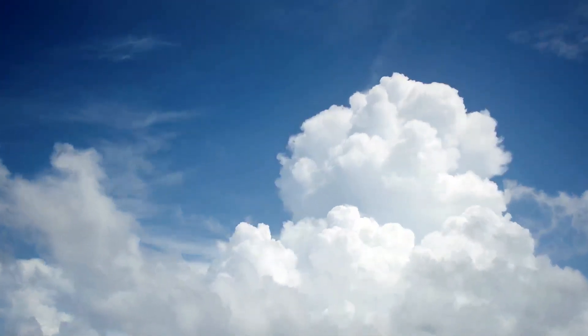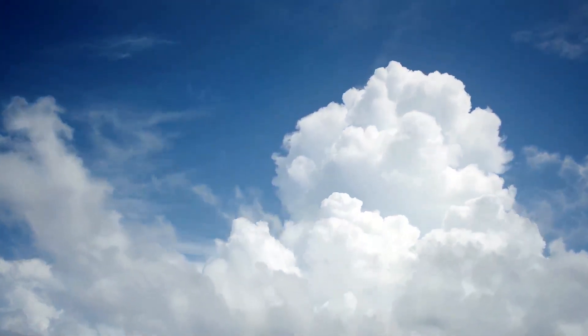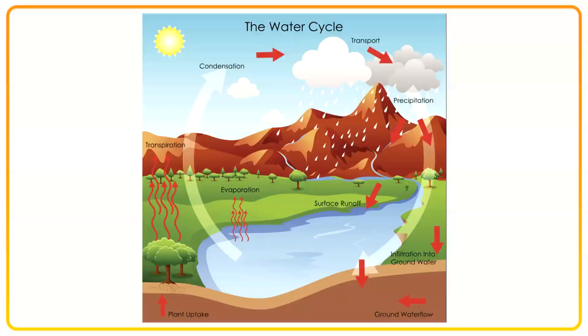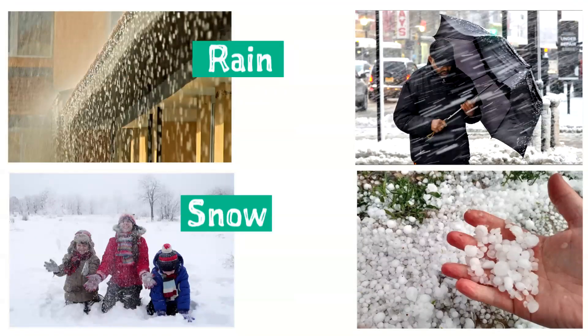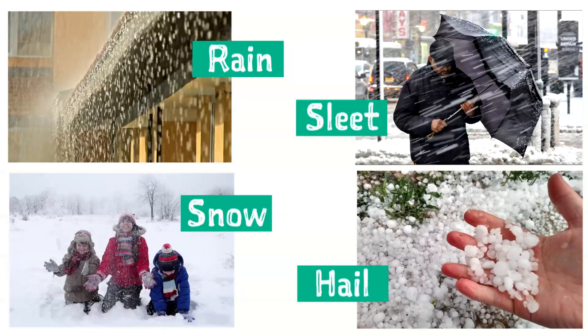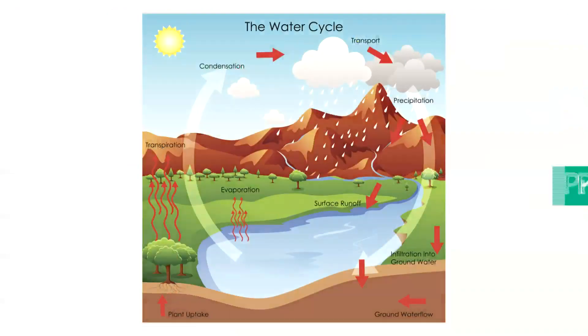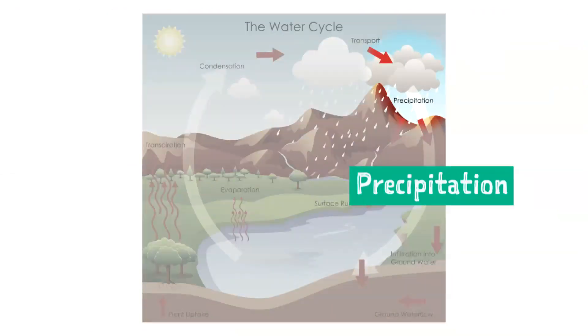Once these clouds get heavy enough, the water is released from them in the form of rain, snow, hail, or sleet. This is called precipitation.